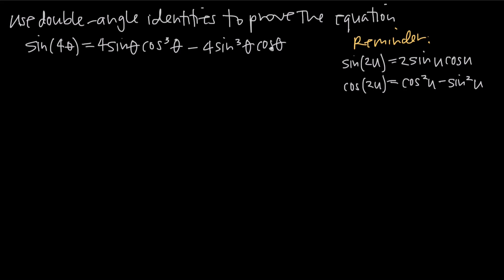Double angle identities are formulas like these ones, where we have sine of 2u — in other words, an angle would normally be theta, but we have 2 times the angle, so we have a double angle. That's why it's called a double angle identity. We can reduce or simplify that using this identity into something that doesn't include a double angle, but just the angle itself.